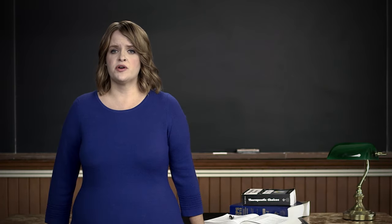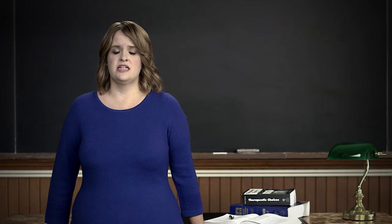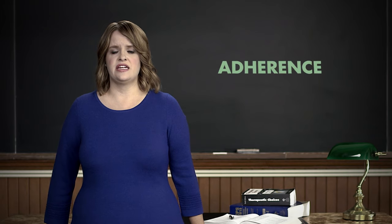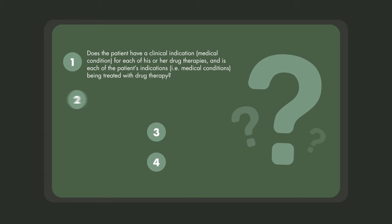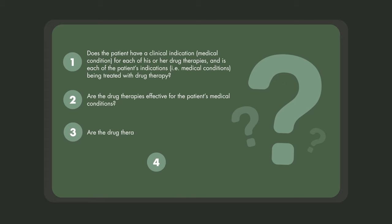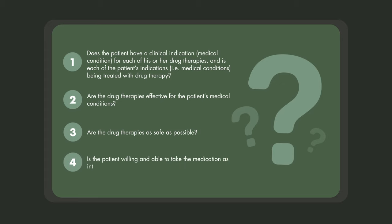After you have collected the relevant information, the process used to identify whether or not the patient is experiencing a drug therapy problem requires an assessment of four drug-related needs. In essence, the process requires the continuous assessment of four logical questions. One: does the patient have a clinical indication — for example, a medical condition — for each of his or her drug therapies, and is each of the patient's indications being treated with drug therapy? Two: are the drug therapies effective for the patient's medical conditions? Three: are the drug therapies as safe as possible? Four: is the patient willing and able to take the medication as intended?